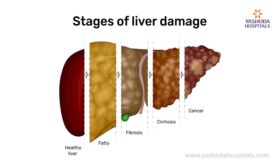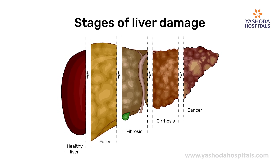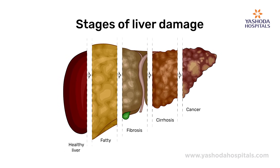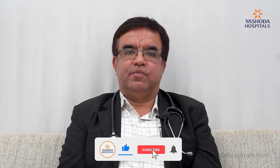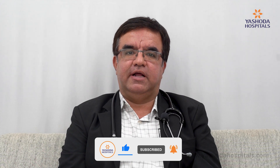Liver cancer is defined as cancer that occurs in the liver. There are two ways a cancer can occur in the liver. The first and the most common is cancer coming from outside the liver, which we call metastasis, and the second is a primary liver cancer. Today I am going to talk about primary liver cancer.